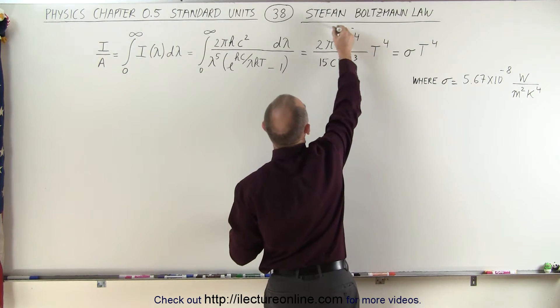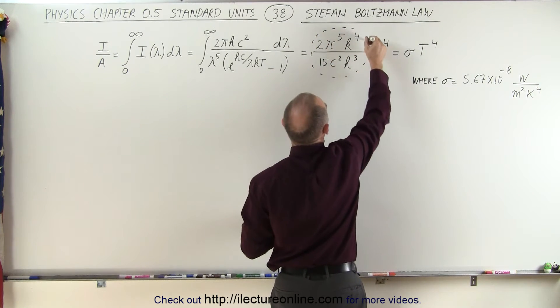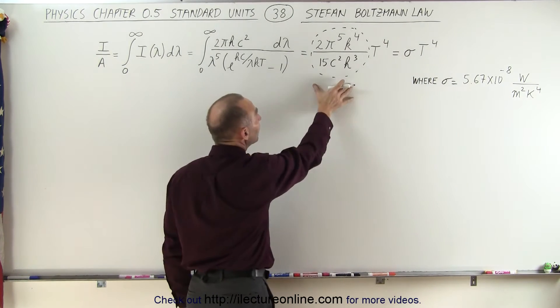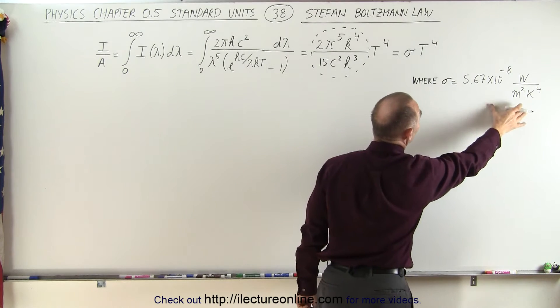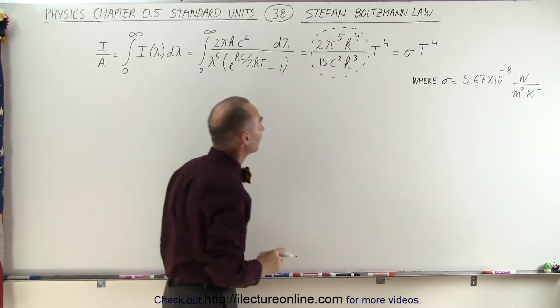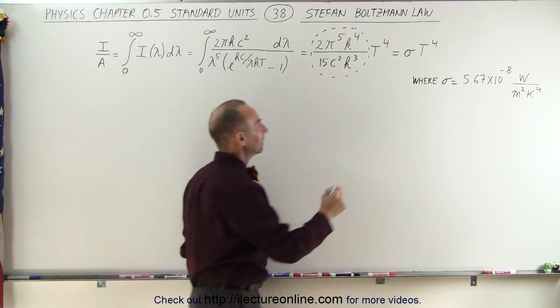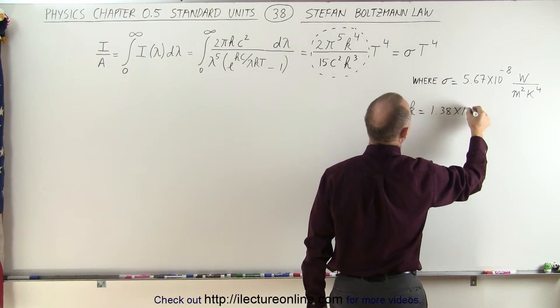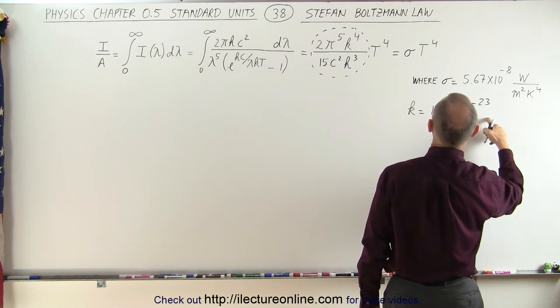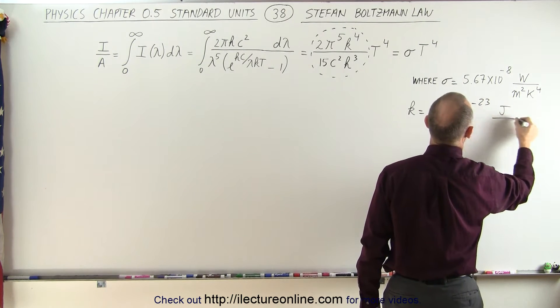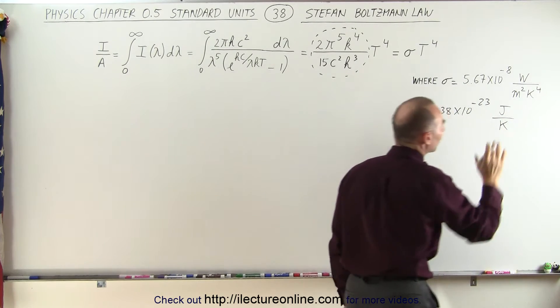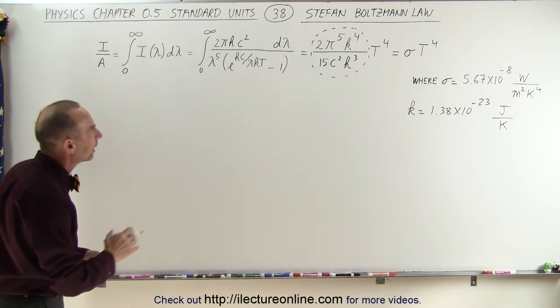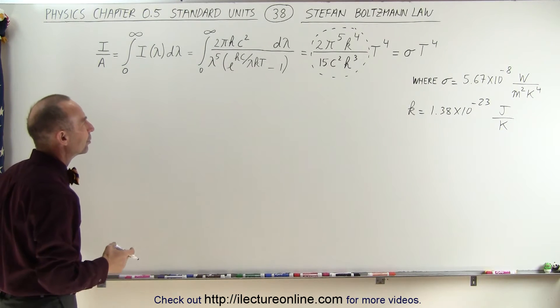We're going to try to find out if this indeed does give us the units of watts per square meter per Kelvin to the fourth power. Well, k is defined as 1.38 × 10^-23 joules per Kelvin per molecule, but we don't have to write per molecule. Now that we know that, let's go ahead and plug everything in and see if we get the right units.